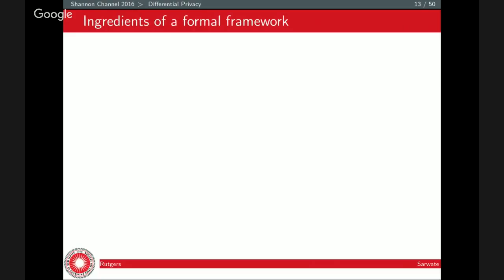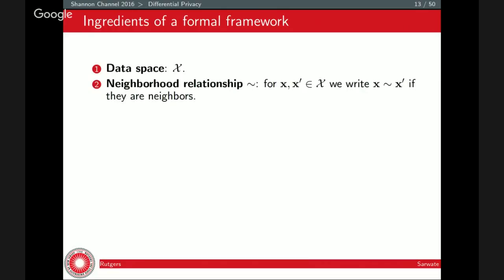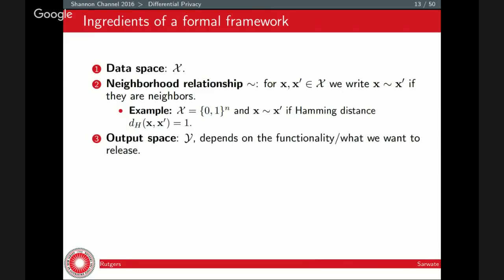How do we formalize this mathematically? We need a data space X — the set of values my data can take. We also need a notion of neighborhood relationship, which is sort of the notion of identifiability. For two databases, one with data x and one with data x-prime, I write x is a neighbor of x-prime. They might be neighbors if they differ in whether you were in the database or not — for example, n individuals each with a bit, where neighbors have Hamming distance one. Then there's an output space Y, since we're going to publish something about the data, and a channel Q which is a randomized map from X to Y.